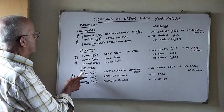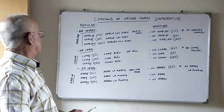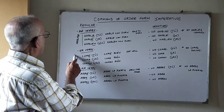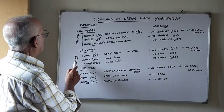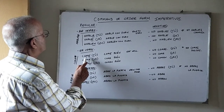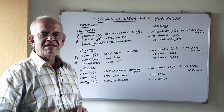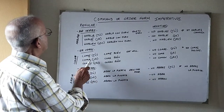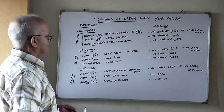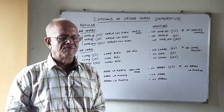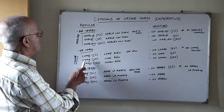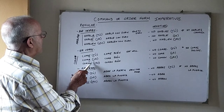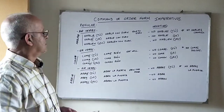The ER and IR verb formations are exactly identical. We remove the R from the ER verb. So COMER, which means 'to eat,' becomes COME in the tú formation — for example, COME BIEN, meaning 'eat well.' In the usted formation, it is the opposite: we replace the E with an A, so it becomes COMA BIEN. And if you want to make it plural, we add the N to the usted form: COMAN BIEN.